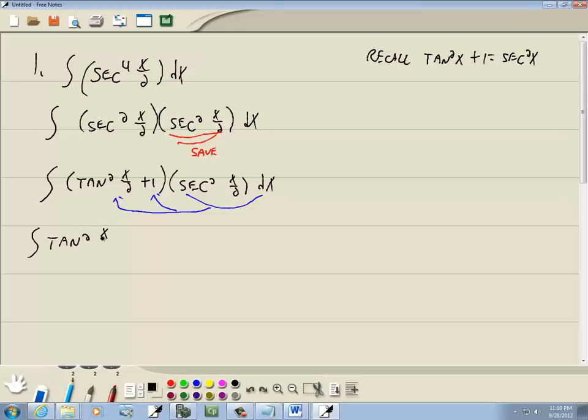And we'll split them into separate integrals while we're at it. So this is tangent squared x over 2, secant squared x over 2 dx plus then the integral of secant squared x over 2 dx.